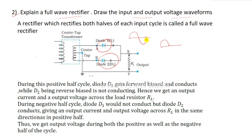During the negative half-cycle, both D1 and D2 conduct alternately to give output during both positive and negative half-cycles. A rectifier which rectifies both halves of each input cycle is known as a full-wave rectifier. During the positive half-cycle, diode D1 gets forward bias while D2 is reverse biased. Hence we get an output current and output voltage across the load resistance.